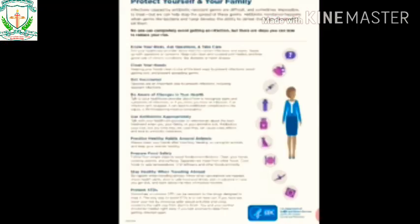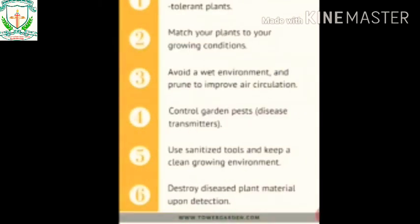Stay healthy while traveling — use masks and sanitizers. Prevent STDs (sexually transmitted diseases) by following precautionary measures. Prevent plant diseases in just six simple steps: grow disease-resistant or tolerant plants; match your plants to your growing conditions; avoid a wet environment and improve air circulation; control garden pests and disease transmitters; use sanitized tools and keep a clean growing environment; and destroy infected seeds and plant materials upon detection.